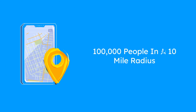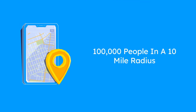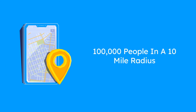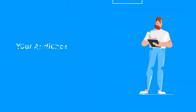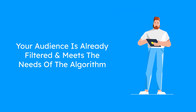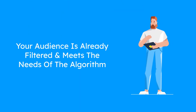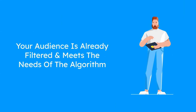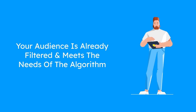Most local audience campaigns only have the potential to reach 100,000 people within a 10-mile radius of the target area. However, because your campaign is specifically focused on one location, you already have a more filtered and engaged audience that is much more likely to convert. In other words, your campaign is already starting from a better position than most others.